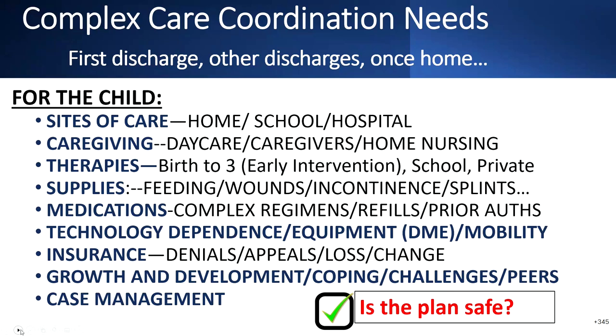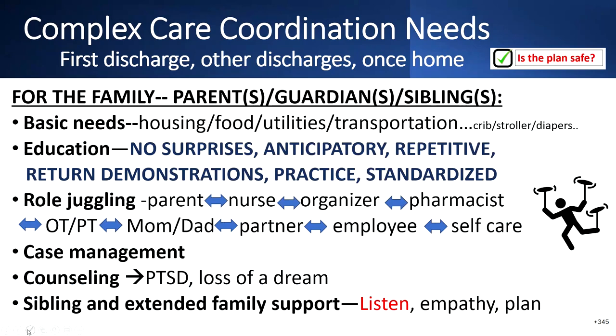For the first discharge, for the family — parents, guardians, and siblings — we have to really work hard to meet their basic needs. If we don't have their basic needs met — such as housing, food, utilities, transportation — it's really hard to attend to the medical needs of these kids unless we've helped them meet those basic needs first. We have limited resources for all of these things, but we try to connect people with the best options we know of.